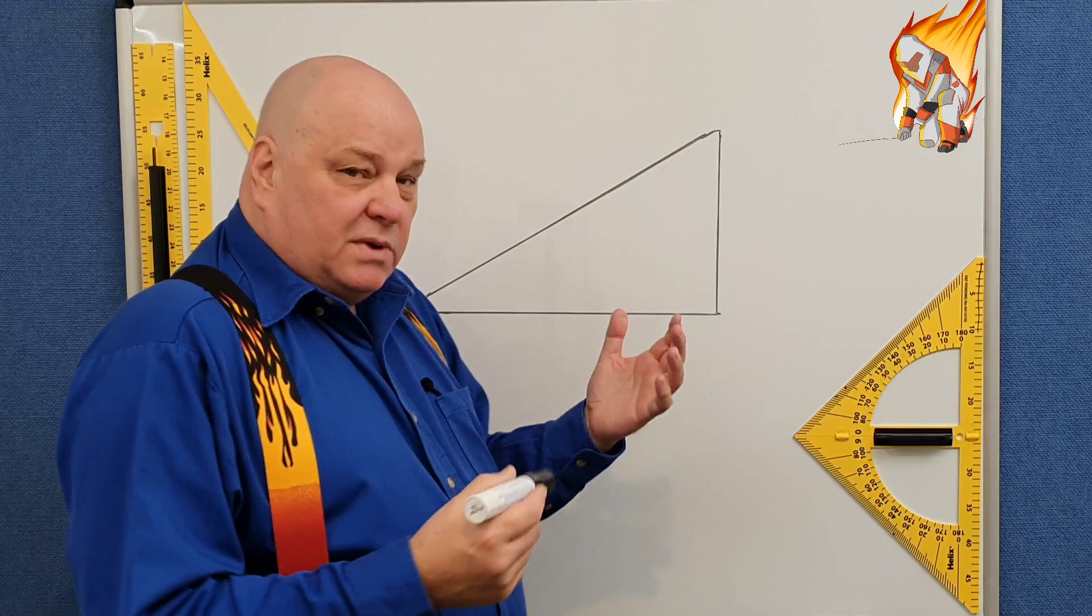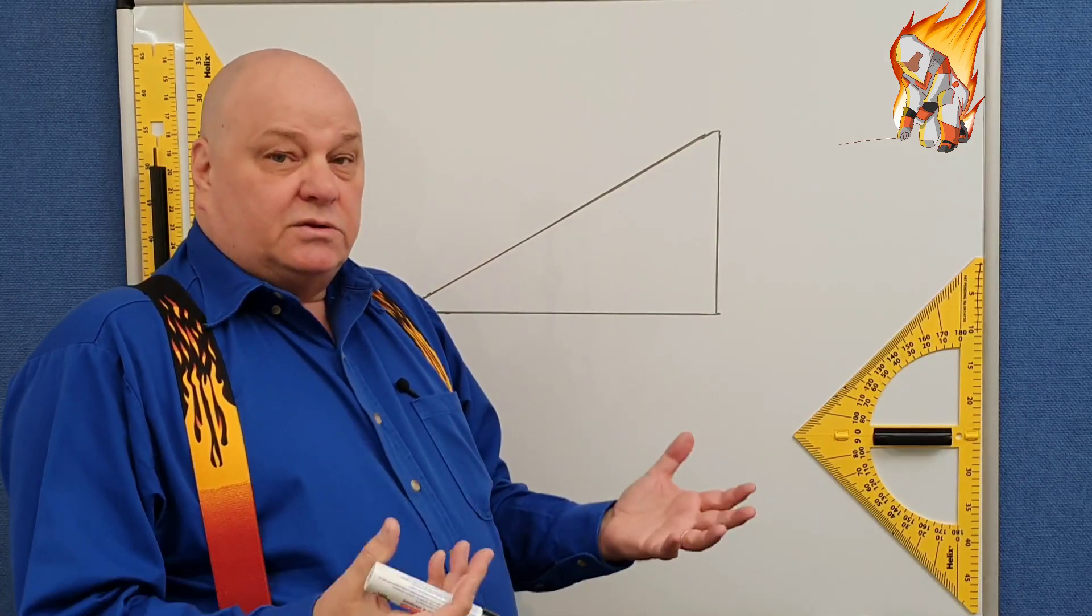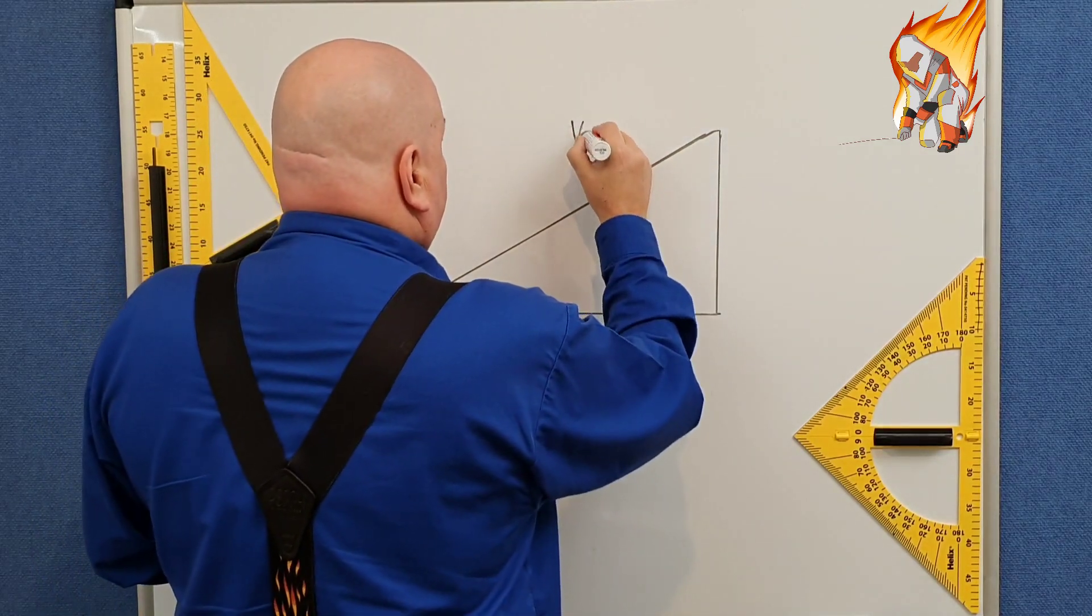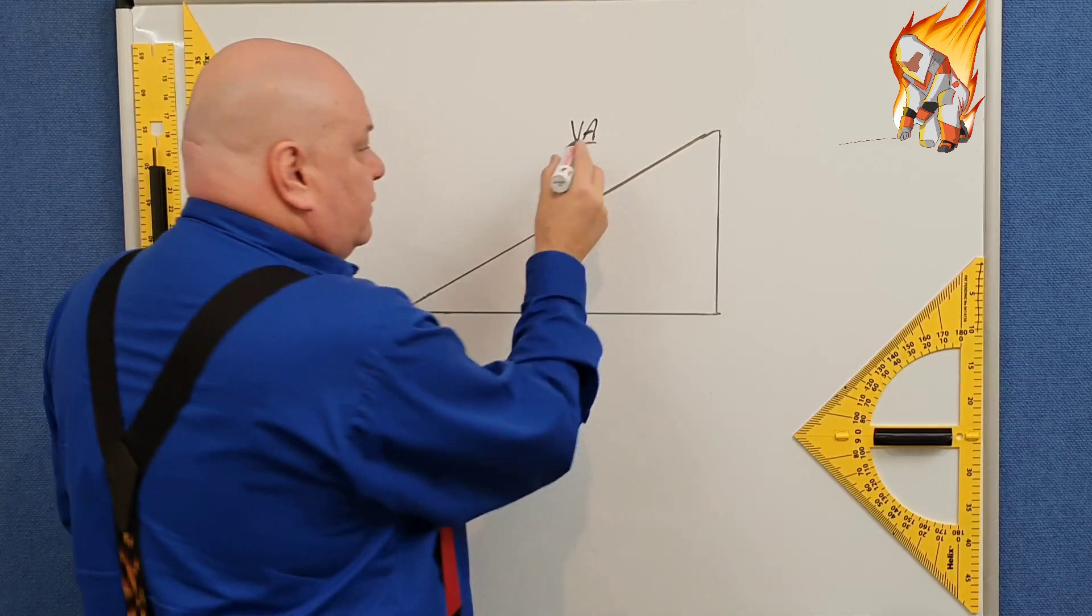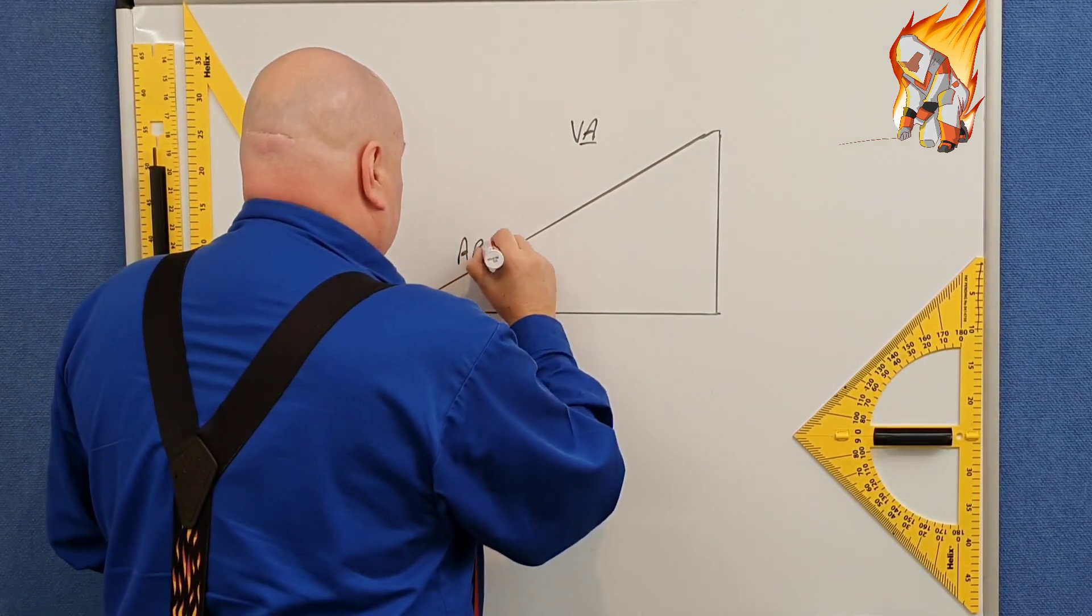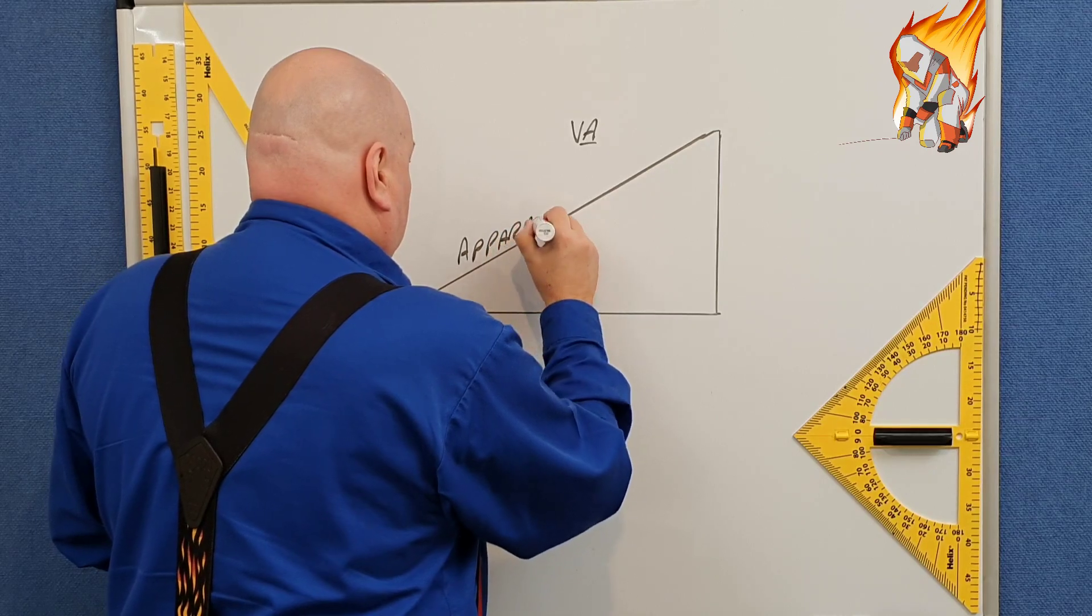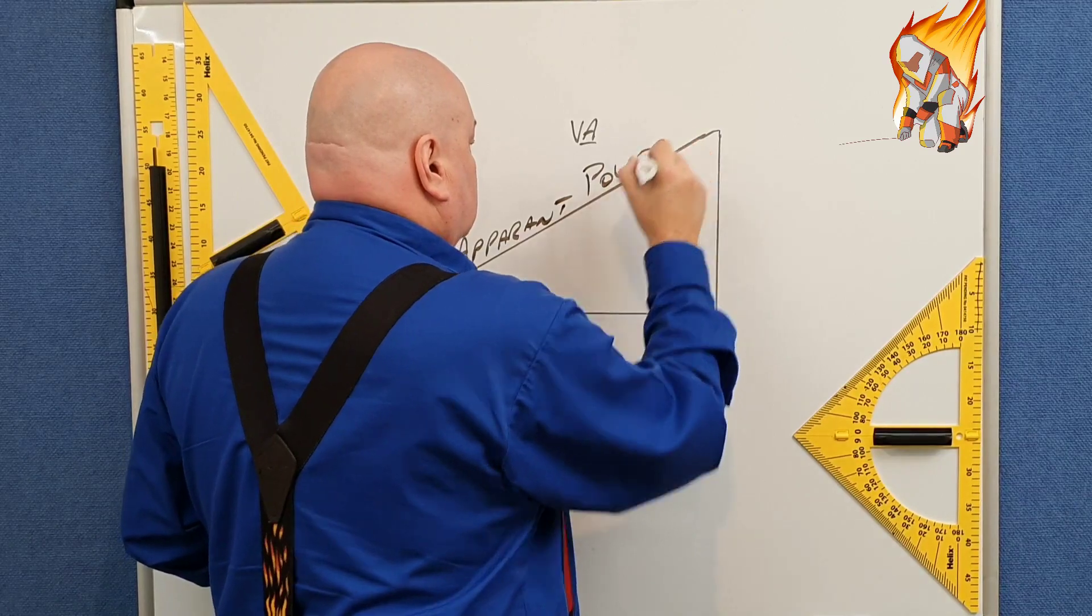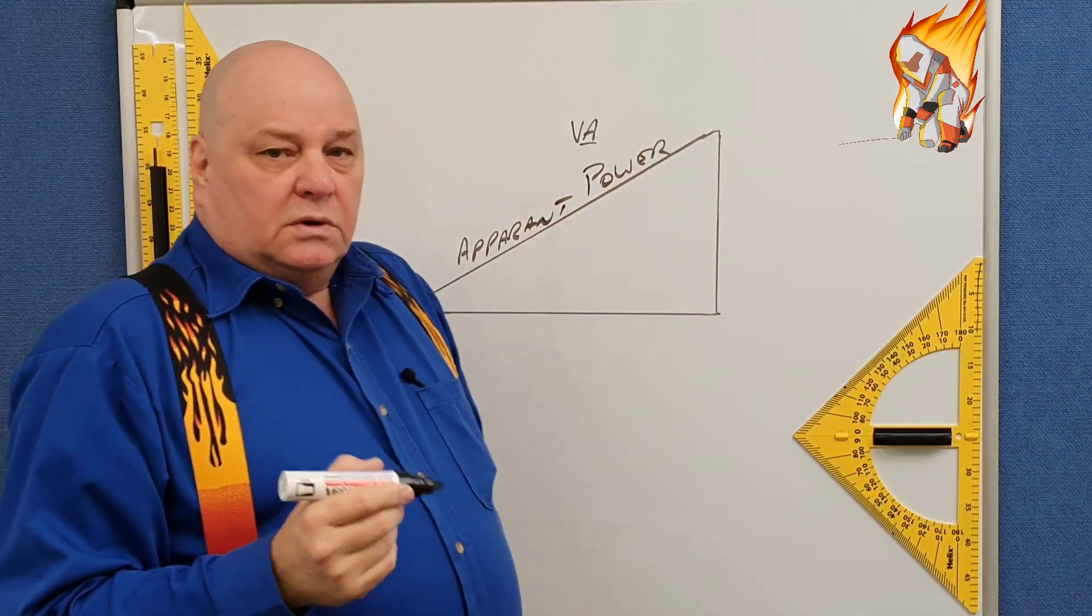And so as you can imagine, if that's our supply, that's going to be the most. That's going to be the longest side of the triangle. So that's this one here, and that's VA. And think of VA for apparent power.